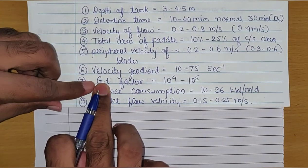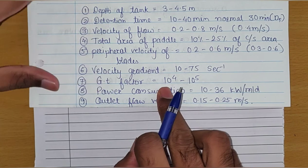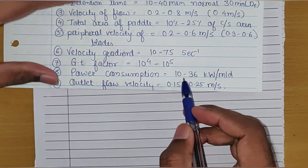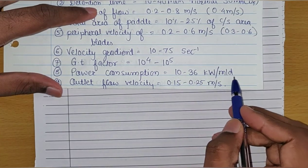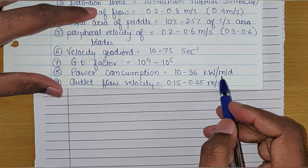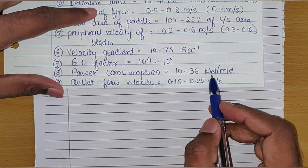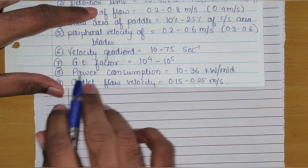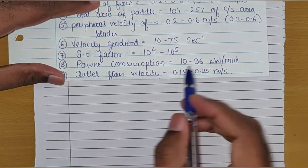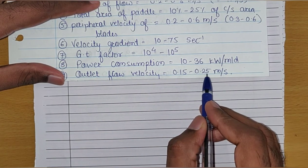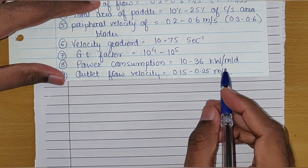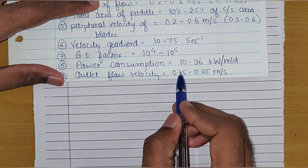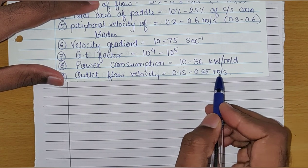The GT factor — velocity gradient multiplied by detention time — should be in the range of 10 raise to 4 to 10 raise to 5. Power consumption should be in the range of 10 to 36 kilowatt per MLD, meaning for the treatment of 1 million liter of water in one day, the power consumption is between 10 to 36 kilowatt. The outlet flow velocity will be 0.15 to 0.25 meter per second — the water going out of the flocculator after flocculation should have velocity in this range.